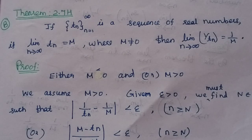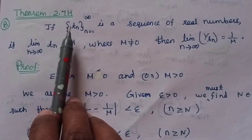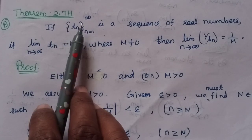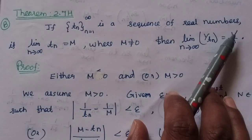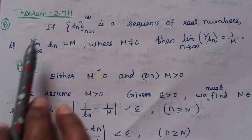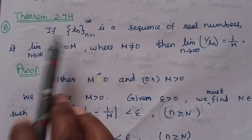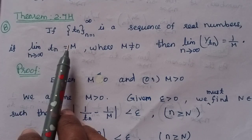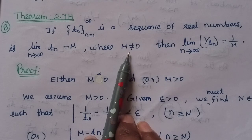Real analysis, third unit at the university, 5 mark question. Prove: if the sequence (tn), n=1 to infinity, is a sequence of real numbers and the limit as n tends to infinity of tn equals m, where m is not equal to 0...